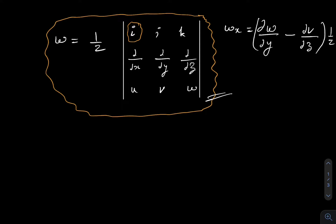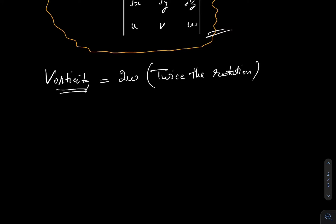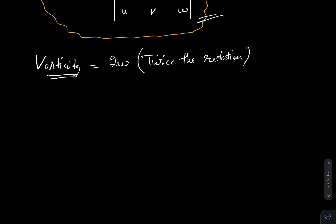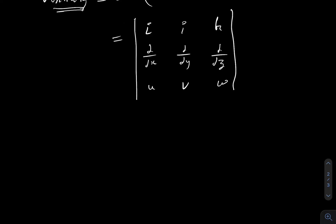We now come across one more term: vorticity. Vorticity is nothing but 2 omega, or twice the rotation. Since the rotation formula has a factor of one-half, vorticity equals the determinant of the matrix with rows (i, j, k), (del/del x, del/del y, del/del z), and (u, v, w) — without the half factor.